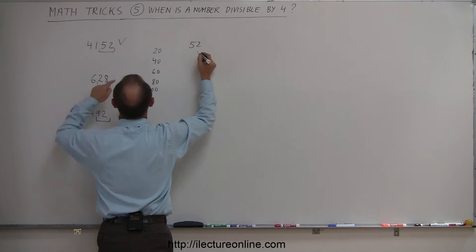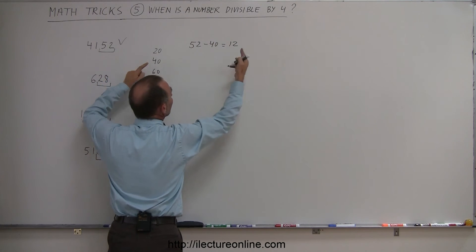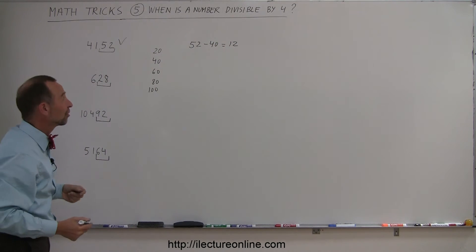So again, you take the last two digits, 52, subtract one of these numbers from it, 40, you get 12, and you know that 12 divided by 4 is 3, so the whole number is divisible by 4.